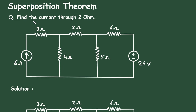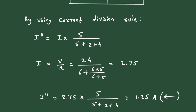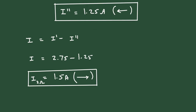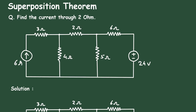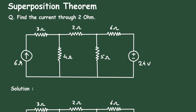This is what we had to find — the current through the 2 ohm resistance. So the current through the 2 ohm resistance is 1.5 ampere. This is how we can find the current by using the superposition theorem. Check the link in the comment section and install the app for free. Thanks for watching.